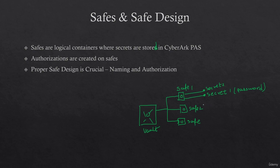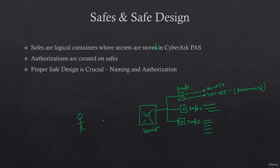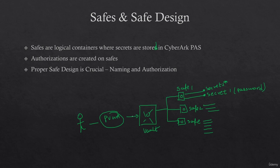Let's say safe two has three secrets and safe three has five. When users connect to the vault and they want to fetch the credentials, they go through PVWA — that's the UI. And when they want to fetch the secret to connect to one of the servers, they have to be authorized and they have to be authenticated.